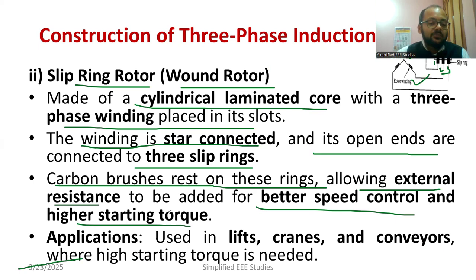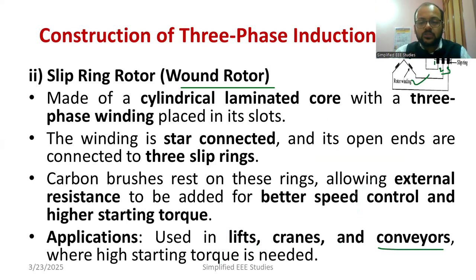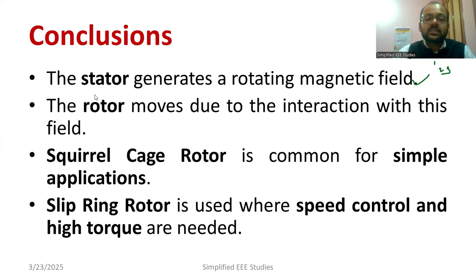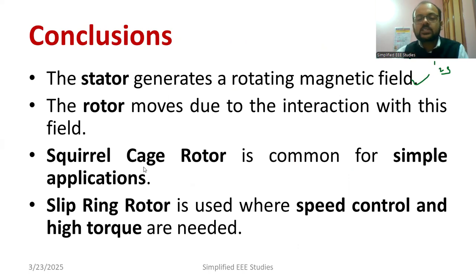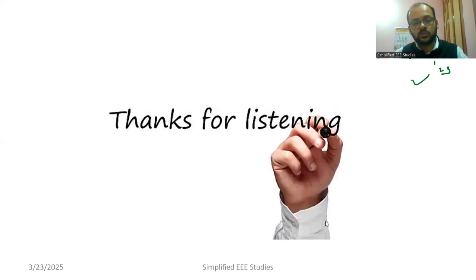Applications of the slip ring induction motor include lifts, cranes, and conveyor belts where high starting torque is desirable. EVs can also use this motor. However, less efficiency and higher construction cost are major drawbacks. To summarize: a three-phase induction motor has two key components — stator and rotor. There are two rotor types: squirrel cage (simple, high efficiency, low starting torque) and slip ring (high starting torque and speed control, but lower efficiency).